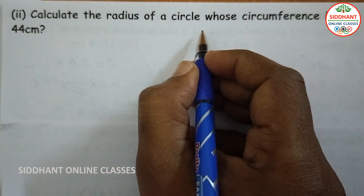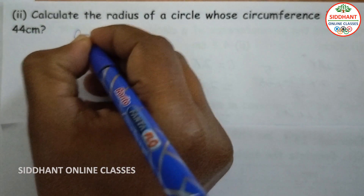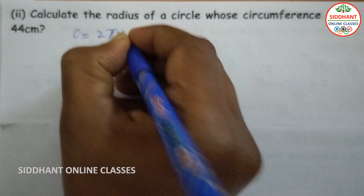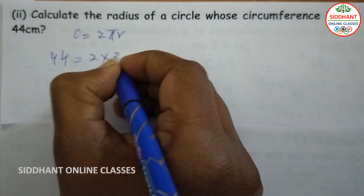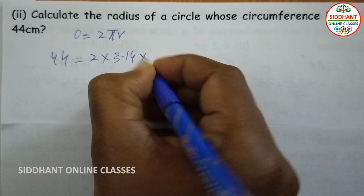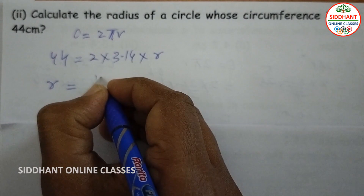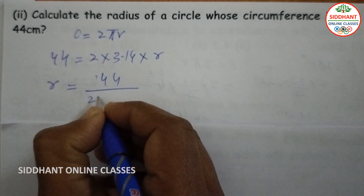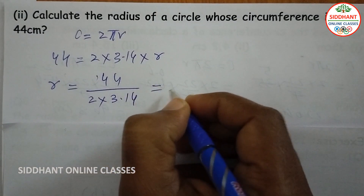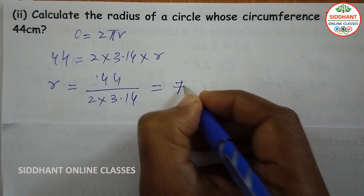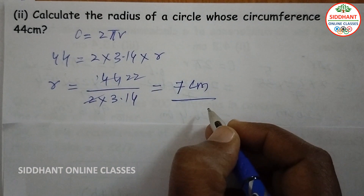Next, calculate the radius of a circle whose circumference is 44 centimeters. We know circumference equals 2 pi r, circumference is given as 44, so 44 equals 2 into 22/7 into radius. Then radius equals 44 by 2 into 22/7, which gives 7 centimeters.